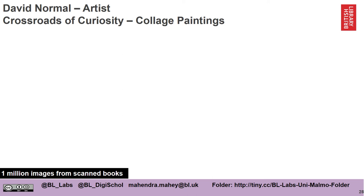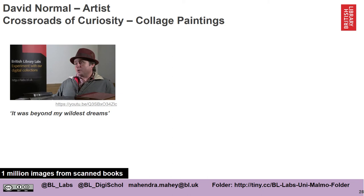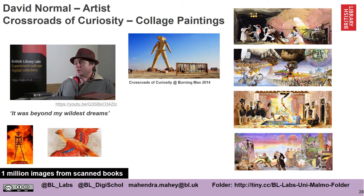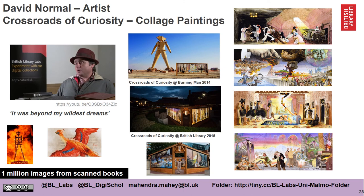David Normal, an artist from California, created a series of collage paintings. David took the images from some of these books, cut them out, collaged them and repainted them on an epic scale, creating four surrealistic-type paintings. These were then exhibited as light boxes at the Burning Man festival in 2014. We then worked with David to take these light boxes and exhibit them at the British Library in 2015 through the Labs project — that's David standing there with the light boxes installed outside in our piazza. We also created an app which, when you hovered over the paintings, would take you back to the page in the book where that image came from.